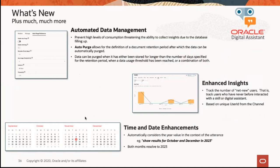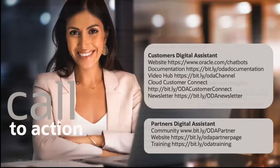There are now automated data management features in 2310. If you've been worrying about purging your conversation logs, there's an auto-purge you can enable. There are also enhanced insights, time and date enhancements, and improved time and date entities. For insights, we've introduced better ability to track net new users — so you can now see if you're gaining net new users over time.